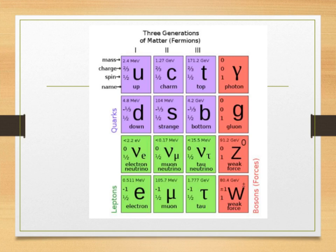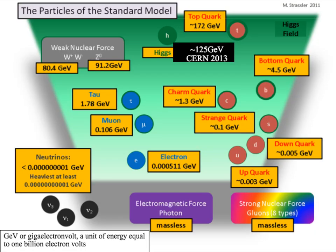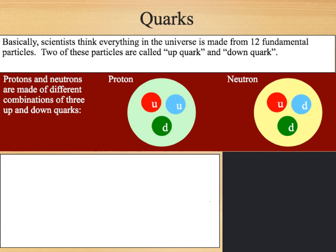For P3 you only need to know about the up quark and the down quark, as these are the quarks that make up both the proton and the neutron. Here we have another diagram of the particles of the standard model, showing our up quark and our down quark as well as our neutrinos and our electron. The Higgs boson was discovered at CERN in 2013. Protons and neutrons are made of different combinations of three up and down quarks — a proton being made of two up and one down, and a neutron being made of one up and two down.